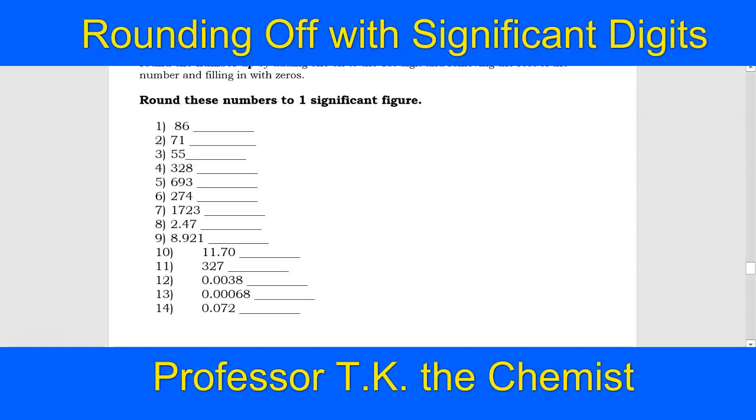Then you look to the right of that number, and that's going to tell you what to do. That six tells that eight to round up. So that eight becomes a nine, and the six turns into a zero.